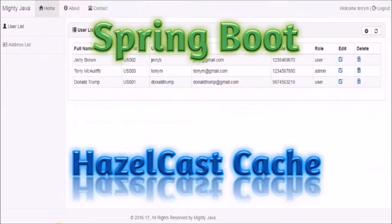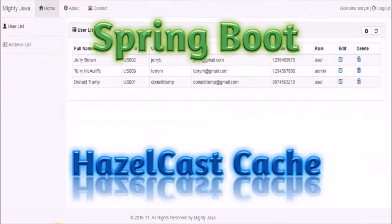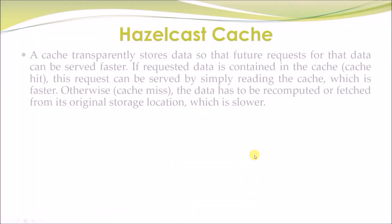In this video, we will see Hazelcast Cache. A cache transparently stores data so that future requests for that data can be served faster. If requested data is contained in the cache — cache hit — this request can be served by simply reading the cache, which is faster. Otherwise — cache miss — the data has to be recomputed or fetched from its original storage location, which is slower.